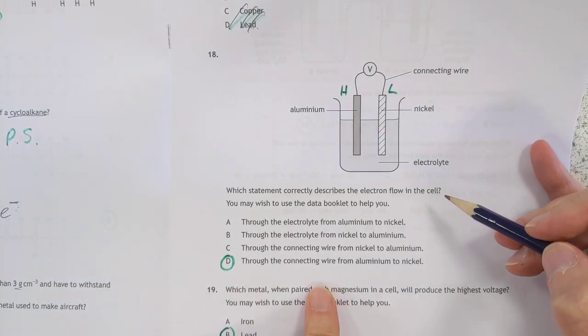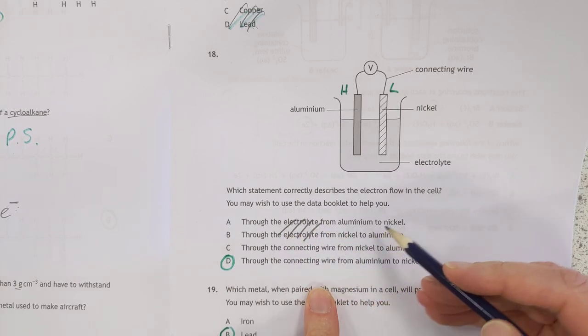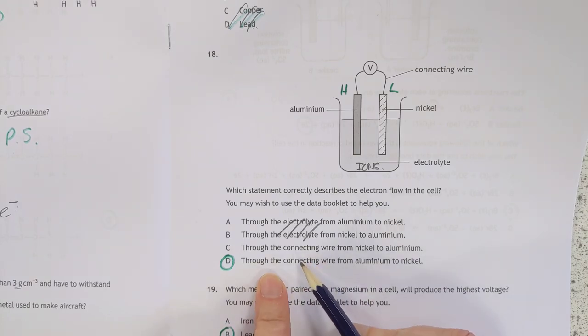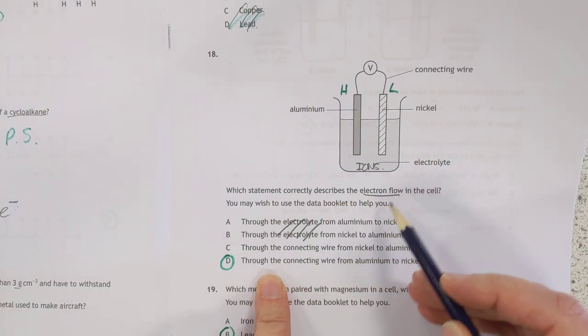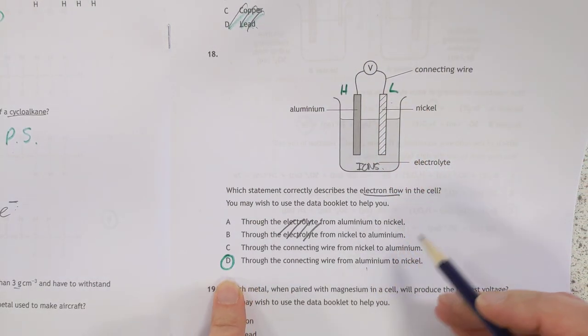Electron flow in the cell. They're trying to catch you out here, because electrons do not flow through the electrolyte. Only ions move in the electrolyte. So they, being electrons, flow through the wires, and they flow from the higher metal, which is aluminum, to the lower metal. So the answer is D.